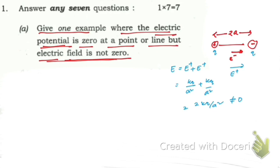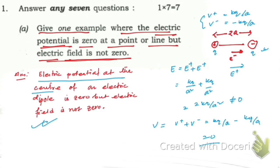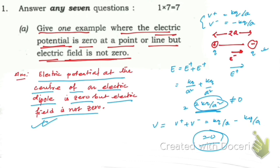Now for the potential: V_positive = kq/a and V_negative = −kq/a for opposite charges. Adding them: V = kq/a − kq/a = 0. So the electric potential at the center of an electric dipole is zero, but the electric field is not zero. This is the perfect example.